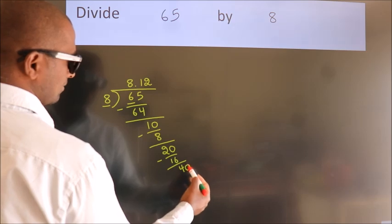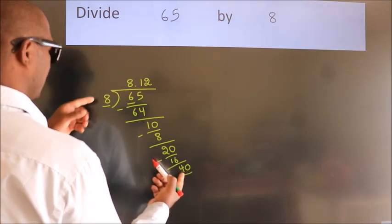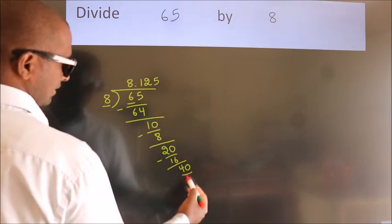So directly take 0. So, 40. When do we get 40 in 8 table? 8 times 5 is 40.